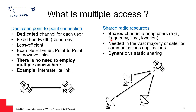On the other hand, multiple access is when a pool of frequencies or a single frequency is shared among multiple users. For example, let's assume three users are sharing the same channel — let's say around 14 gigahertz and around 20 megahertz of bandwidth — with many users sharing this particular channel. So the question is: how would these users be able to share the same frequency? And this is what we will see in this lecture.